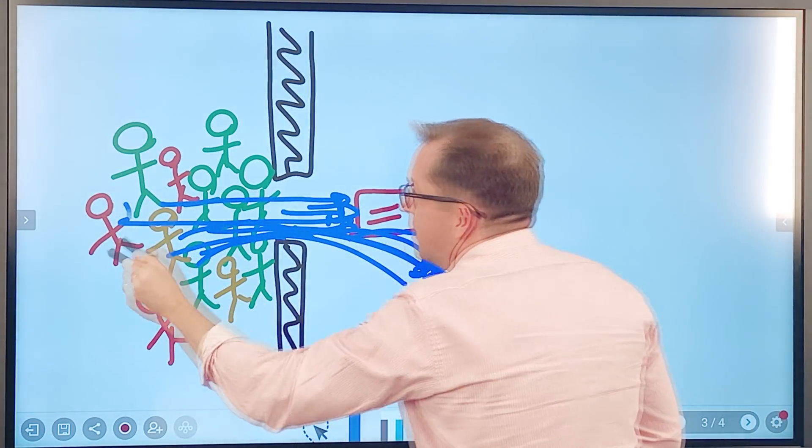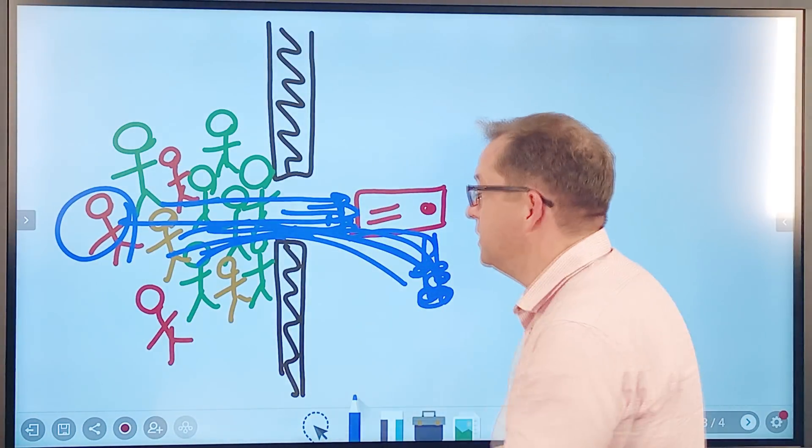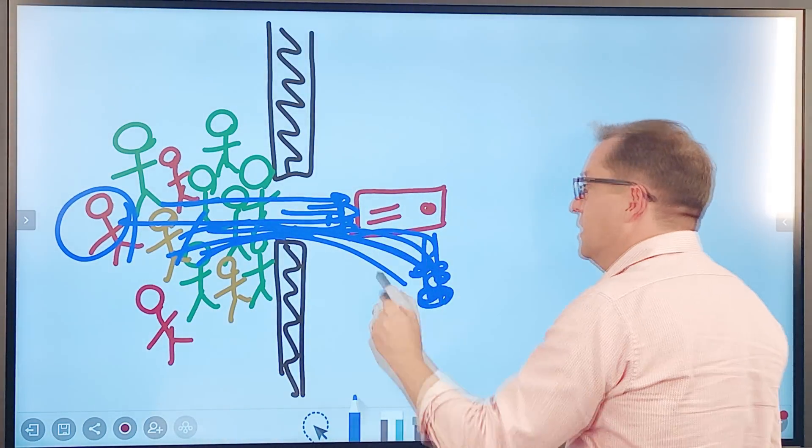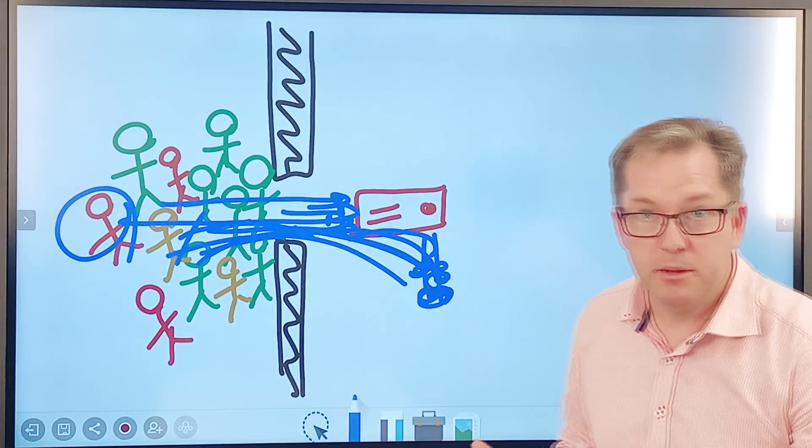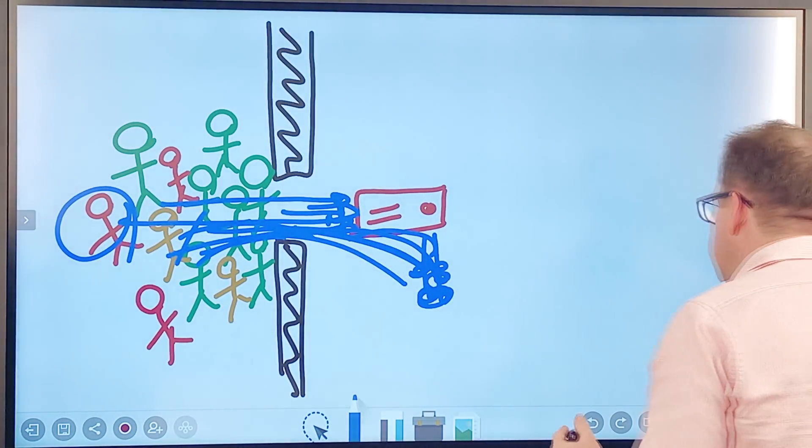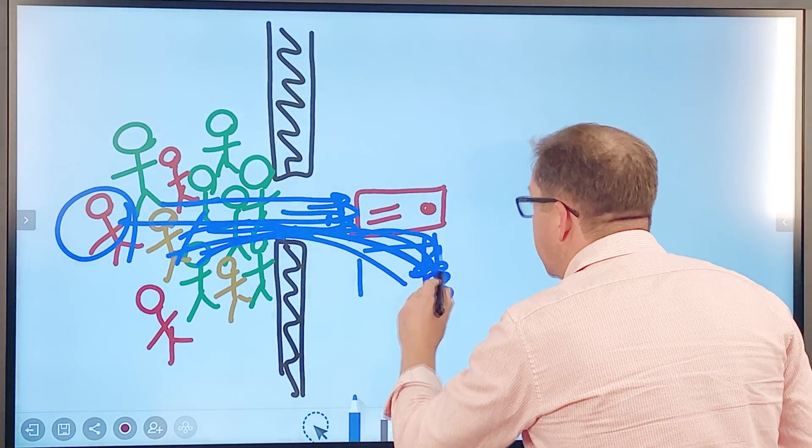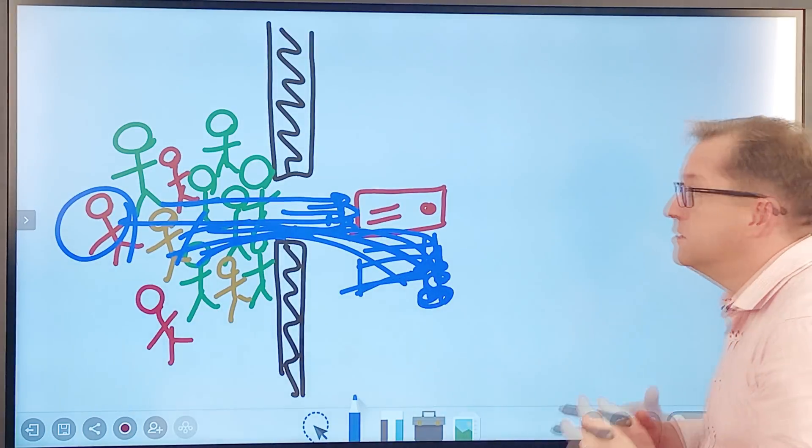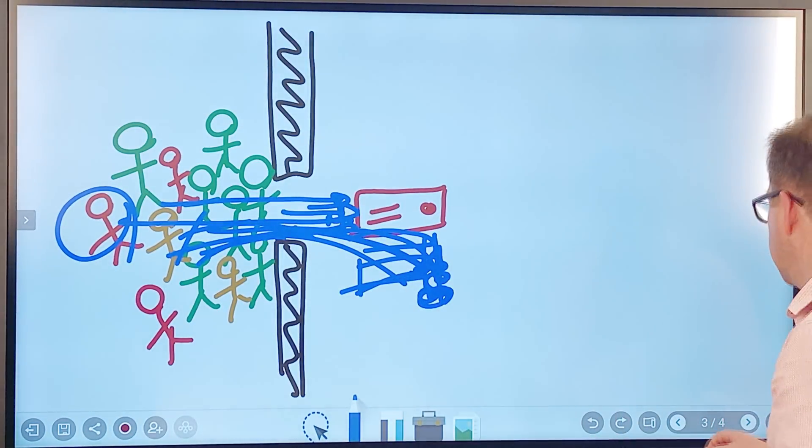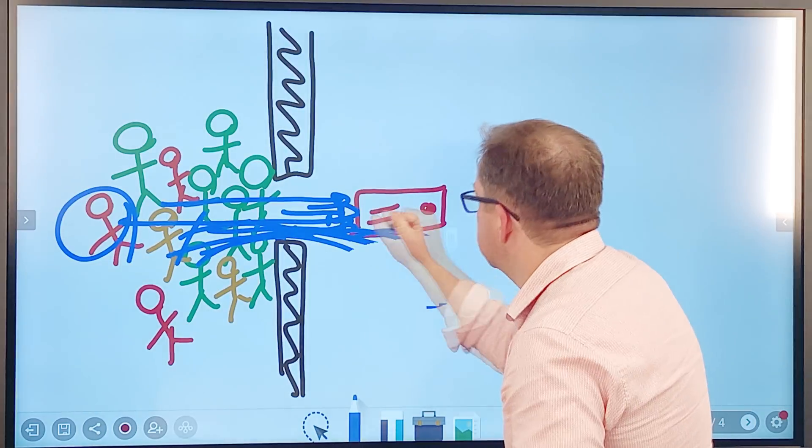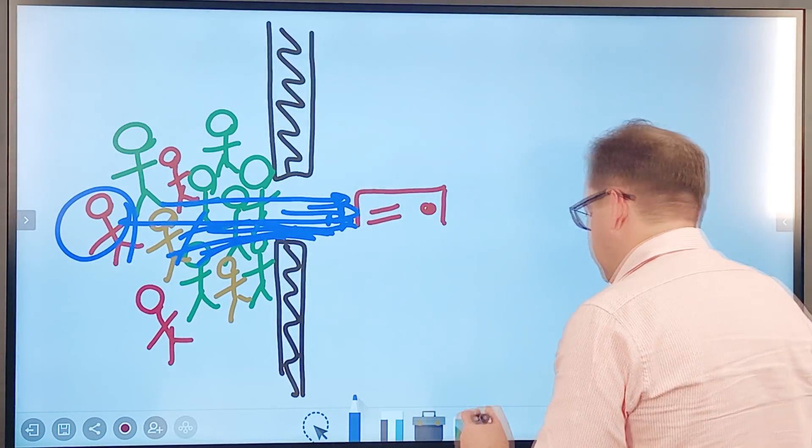And then so you can see the guy in red back here. He's not going to get that information. It's actually failed because the server hasn't been able to keep up. So what happens is we need to start adding more resources to this type of scenario. And this is where the elasticity of the cloud comes into play.